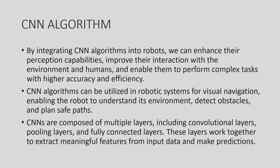CNNs enable robots to detect obstacles and plan safe paths. CNNs are composed of multiple layers, including convolutional layers, pooling layers, and fully connected layers. These layers work together to extract meaningful features from input data and make predictions.